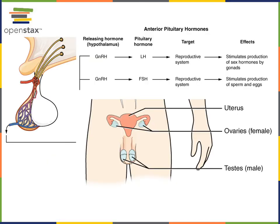The hypothalamic-pituitary-gonadal axis, or HPG axis, starts with the hypothalamus producing GnRH to stimulate the anterior pituitary to release LH and FSH — the tropic hormones that stimulate the gonads. LH stands for luteinizing hormone and stimulates the production of the steroid sex hormones. FSH stands for follicle-stimulating hormone and stimulates the production of sperm and eggs.